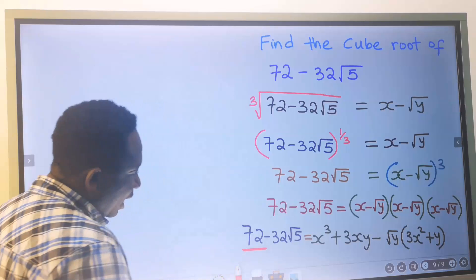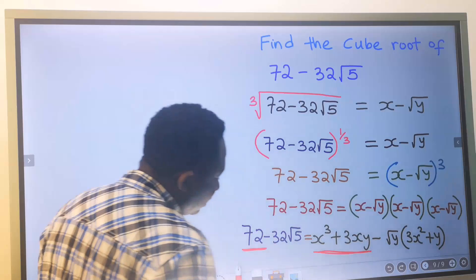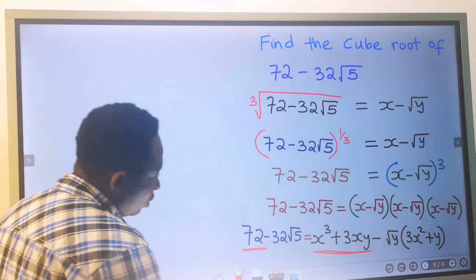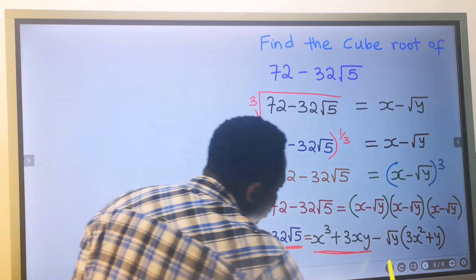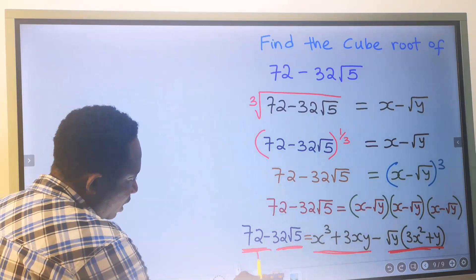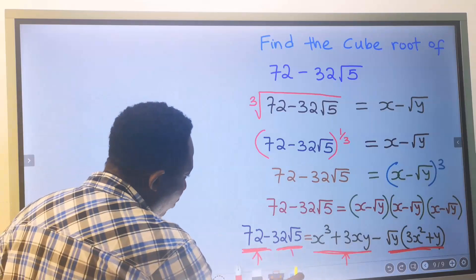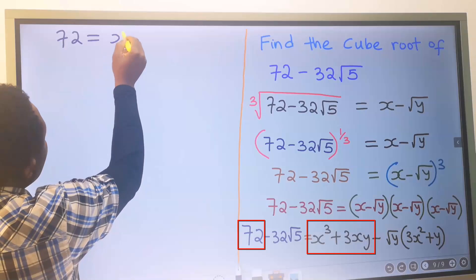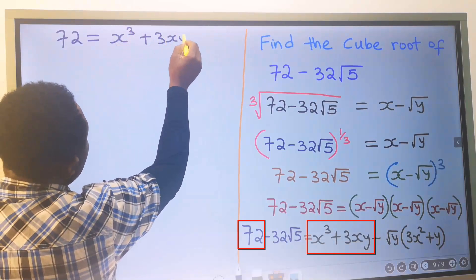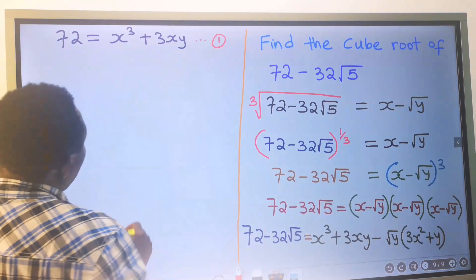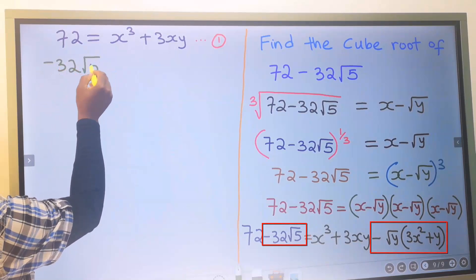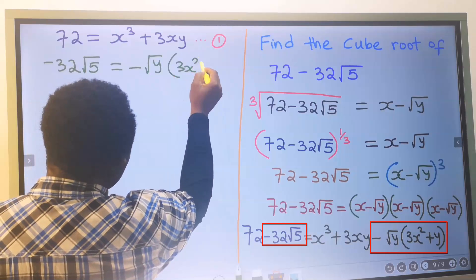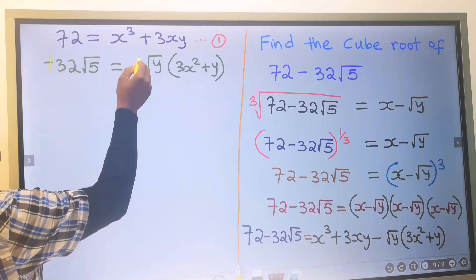72 has no square root, so I will equate it to the part that has no square root, which is x to the power of 3 plus 3xy. Also, I will equate the part with a square root to the other part with a square root. I will call this equation 1. That is: 72 is equal to x to the power of 3 plus 3xy.